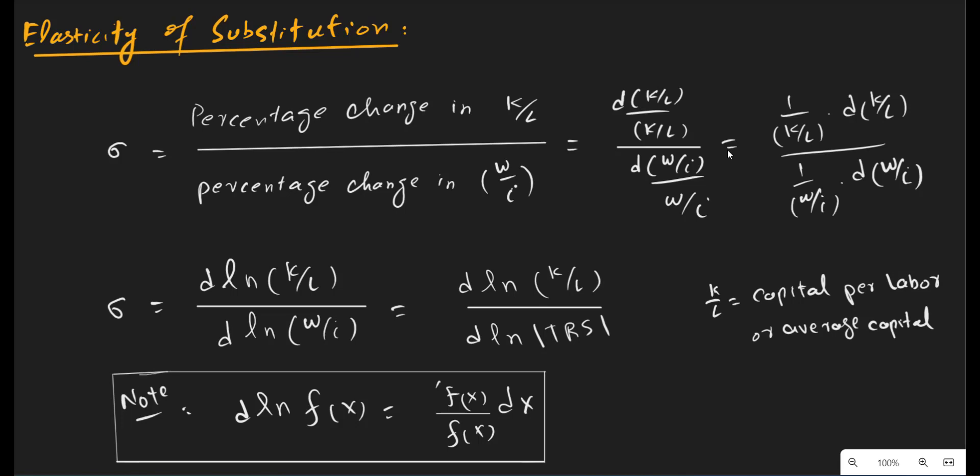As we know, in the isocost-isoquant analysis we assume that the price of factor inputs remains constant — that is, the wage rate and interest rate remain constant. Now the question arises: if there is a change in the price of either of these factor inputs — either capital or labor — what will happen to the demand for labor and capital? So if there is a variation in the prices of one of the factor inputs, that is in wages or the interest rate, the K/L ratio may also change.